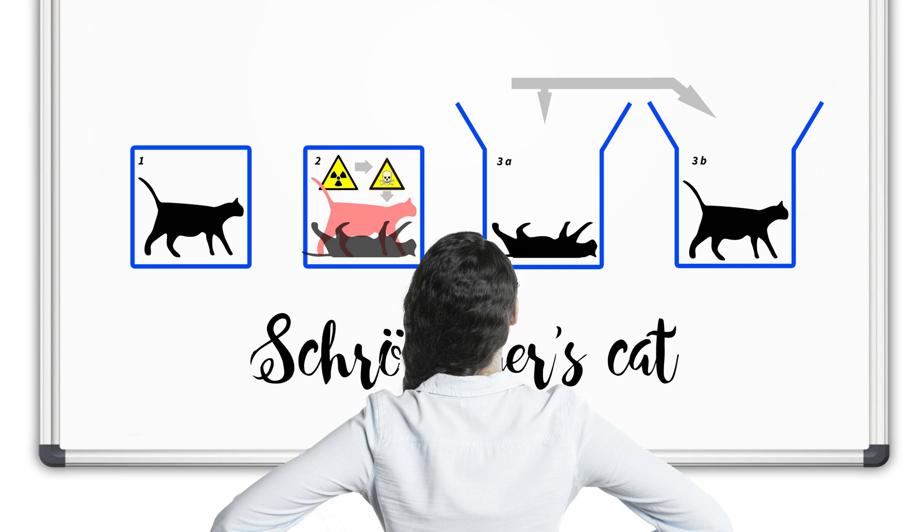Now here is where things get wild. In the strange world of quantum mechanics, particles like the radioactive atom can exist in multiple states at once. This means the atom is both decayed — that is, triggering the poison — and not decayed at the same time. So until you open the box and look inside, the cat is in a superposition. It's both alive and dead simultaneously.